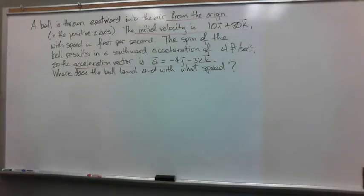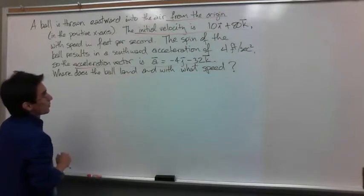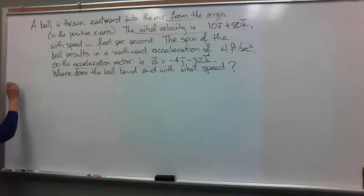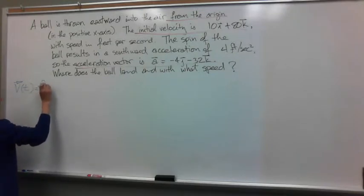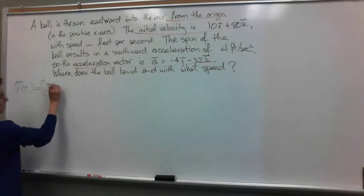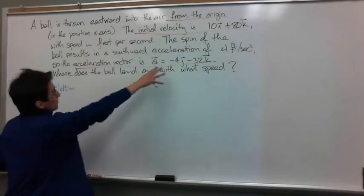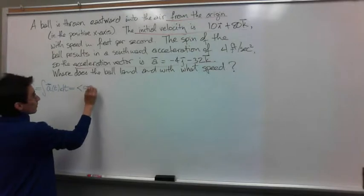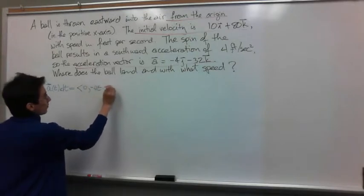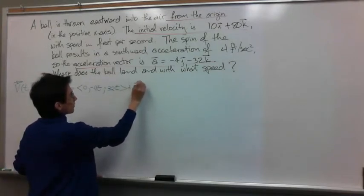The first thing I have to do is find my velocity vector function. I can do that by integrating my given acceleration vector function. So the integration of this vector will be equal to 0, minus 4t, and minus 32t. And we don't have to forget our constant C.